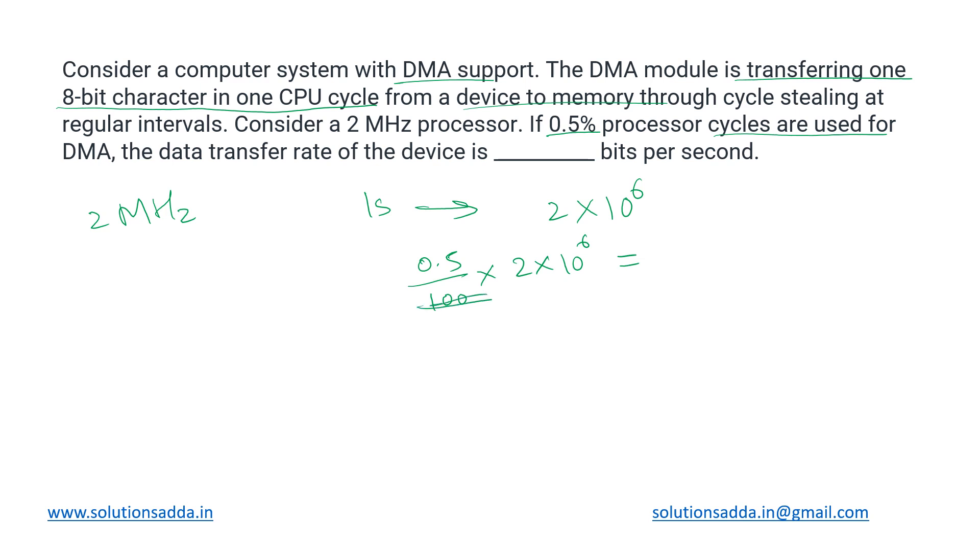That gives us 10 to the power 4. So 5 times 10 to the power 3, that becomes 10 to the power 4, or 10,000.